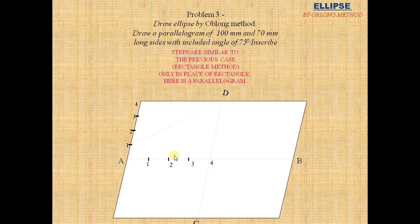Now join one of the vertical side to one end of the minor axis. That means D to 1, D to 2, D to 3. D to 4 already exists. Now join 1 to C and 2 to C and 3 to C. 4 to C already exists.